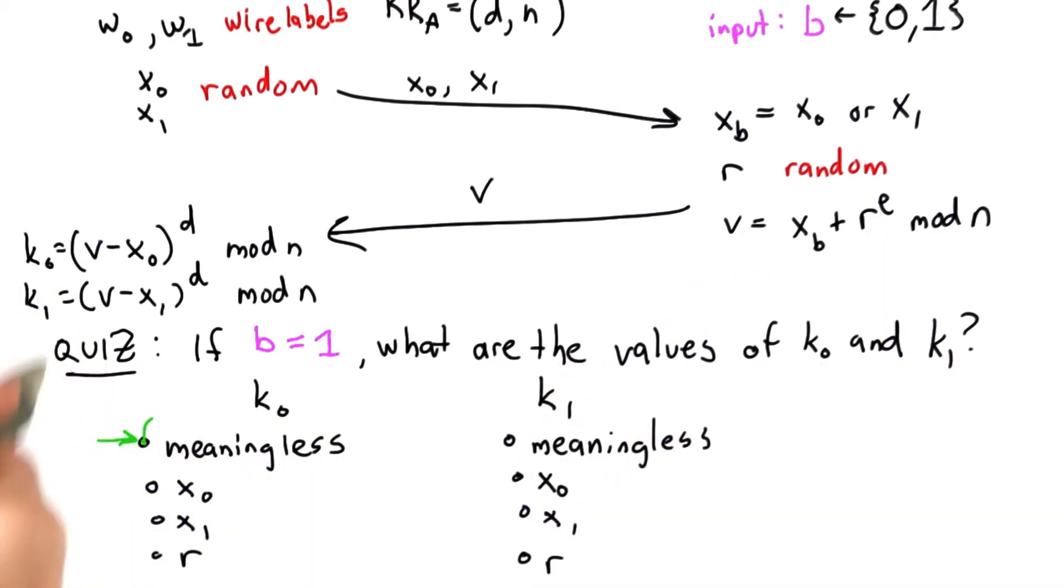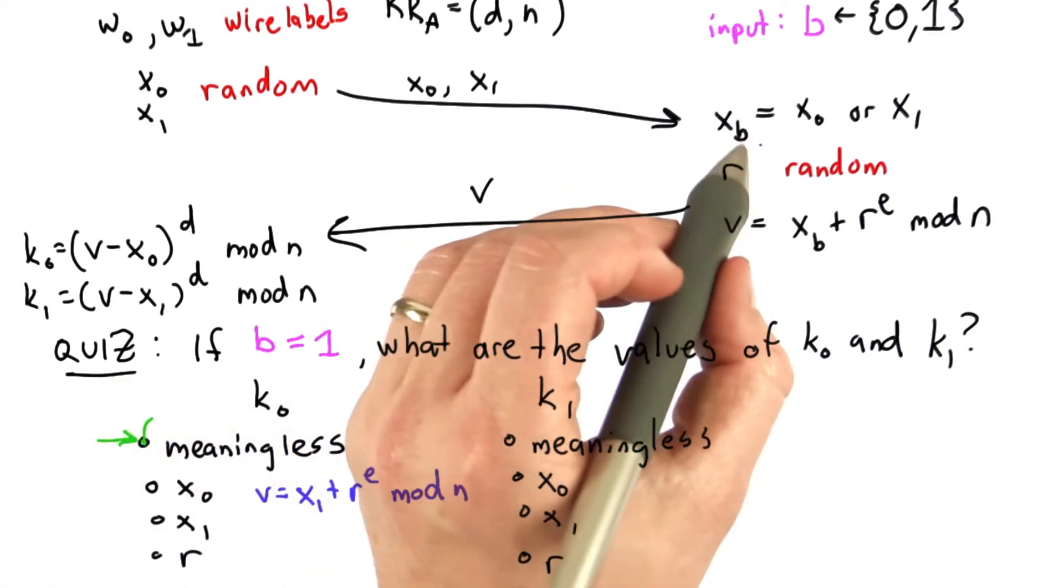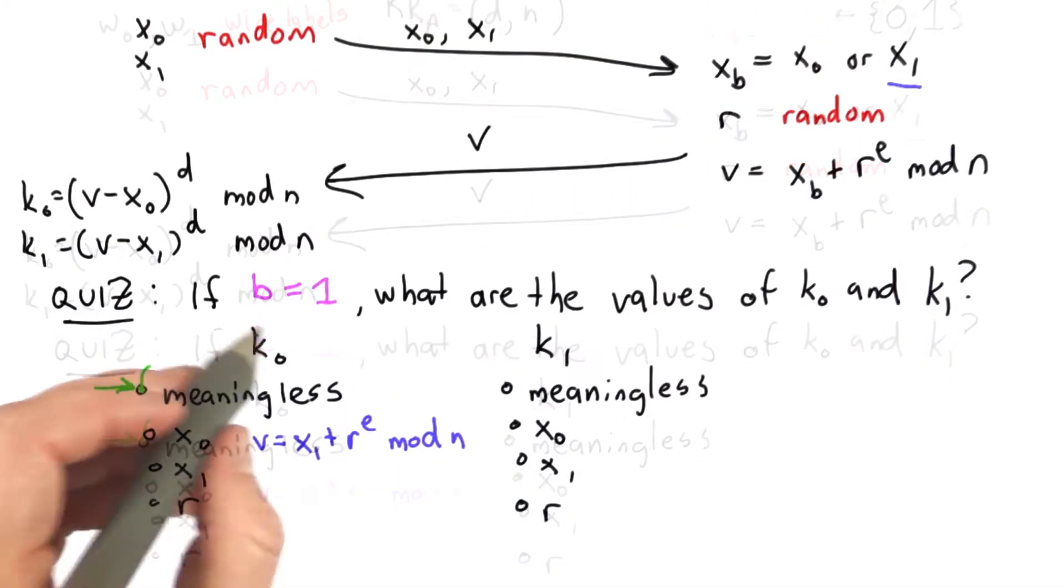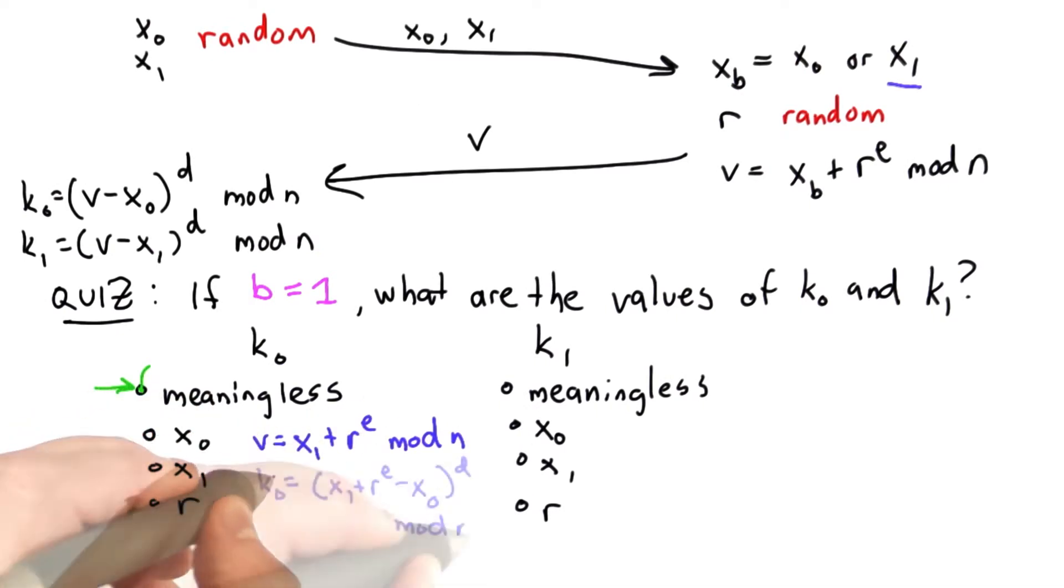And the reason for that is this value v would be x1 plus r to the e mod n. That's because xb is x1. So the value for k0 is v minus x0 raised to the d power mod n. There's nothing that gets rid of this random value, and there's no reason this would be meaningful.